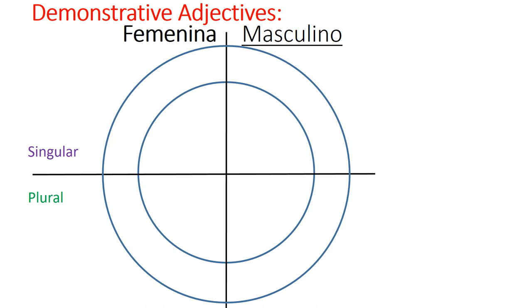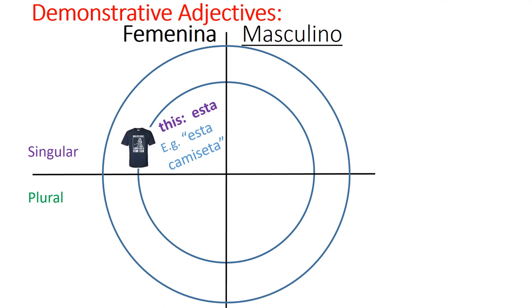Let's start filling in the chart. The feminine singular form of 'this' is esta. If I want to say 'this shirt,' I'd say esta camiseta — this one right here. Notice how it's feminine and singular.